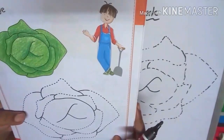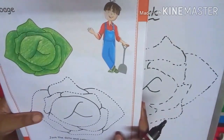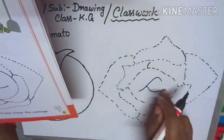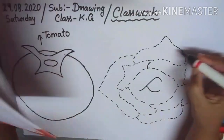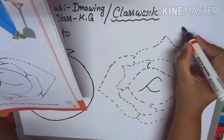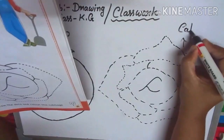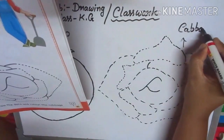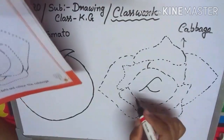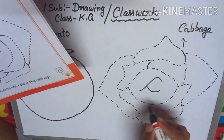Next, see cabbage. You know cabbage is a vegetable. So follow me. This is cabbage. Cabbage. And cabbage color is green. So again, join the dots and color the cabbage.